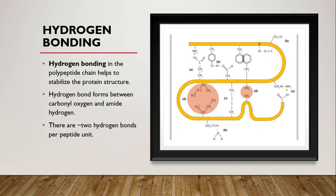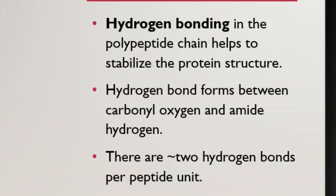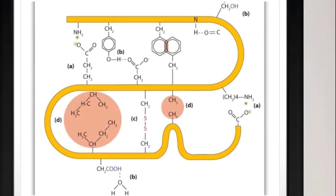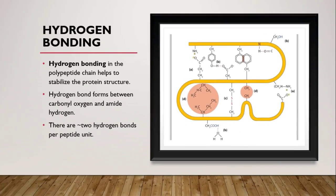Next, we have hydrogen bonding. Proteins are composed of amino acids, and within the protein there are carbonyl and amide hydrogen bonds. This hydrogen bonding stabilizes the protein structure. One peptide unit can form two hydrogen bonds. The peptide chain has an amino group on one end and a carboxyl group on the other, and these amino acids interact through hydrogen bonds.